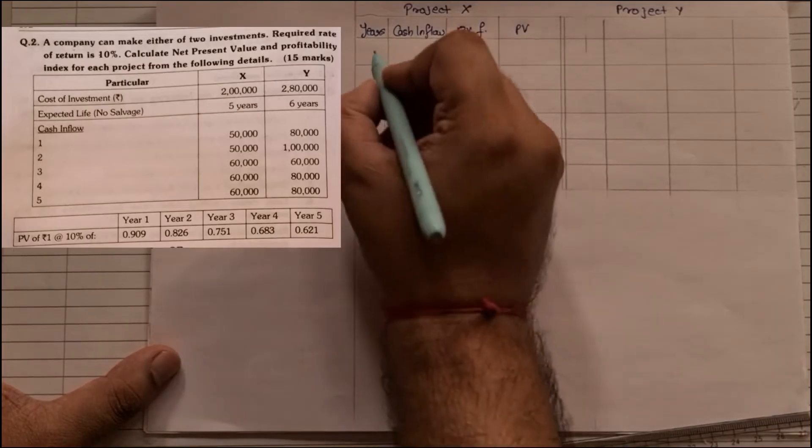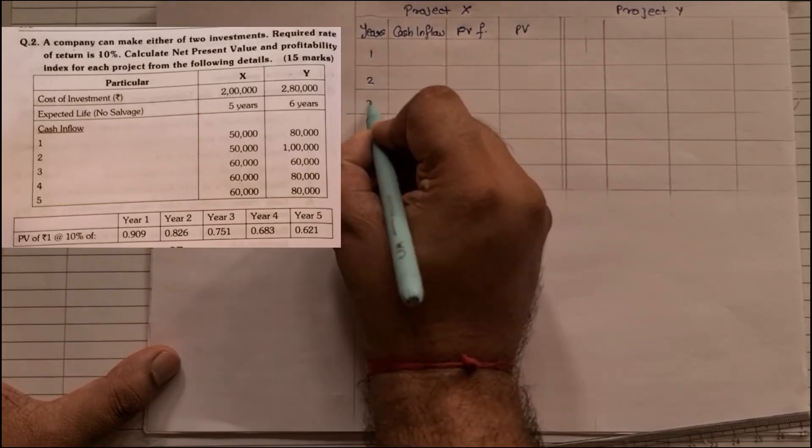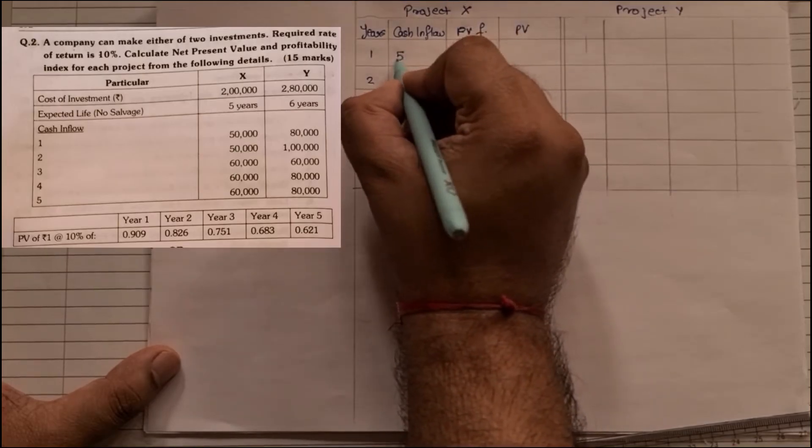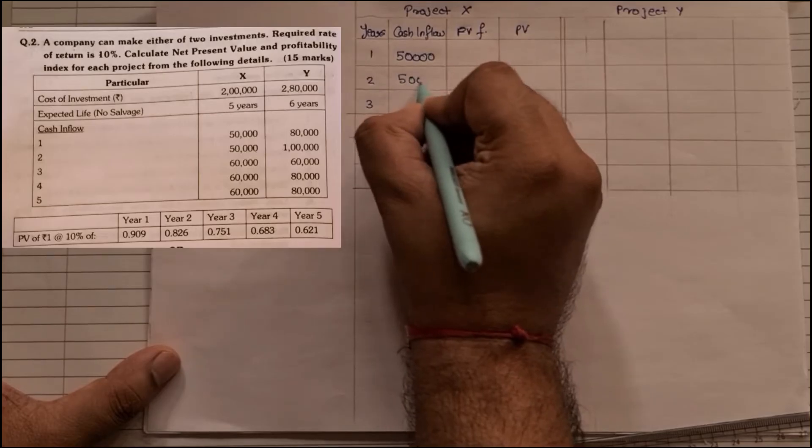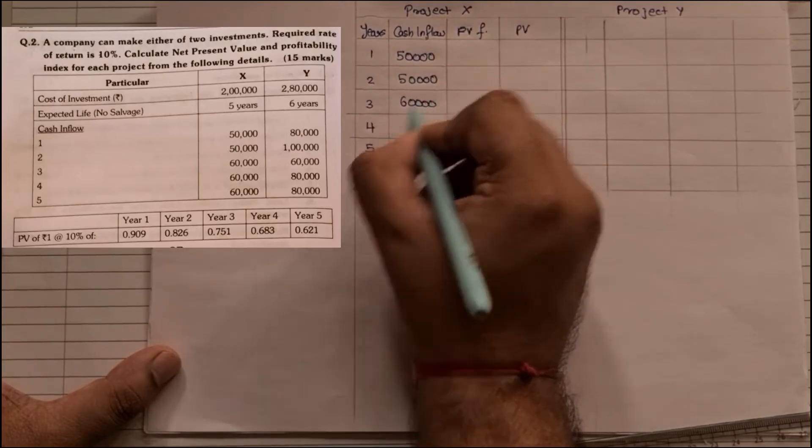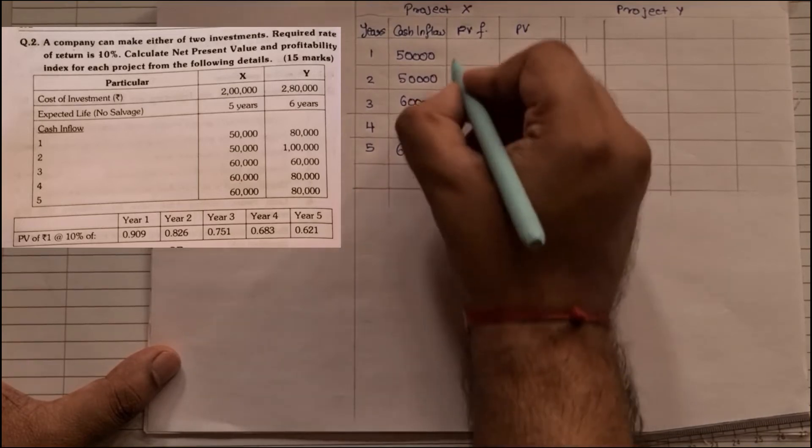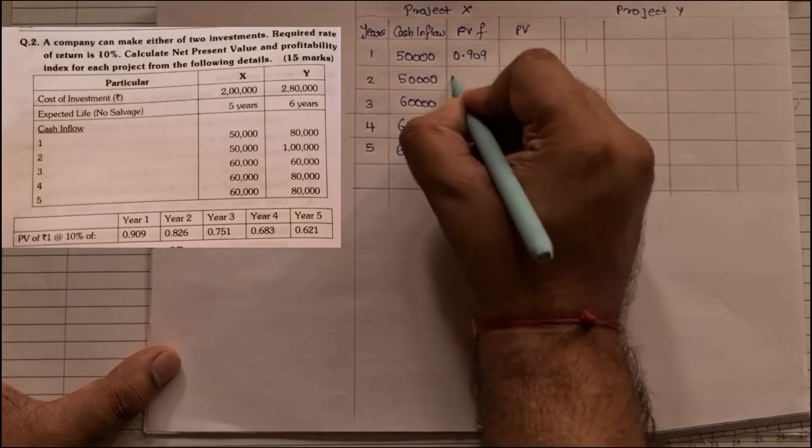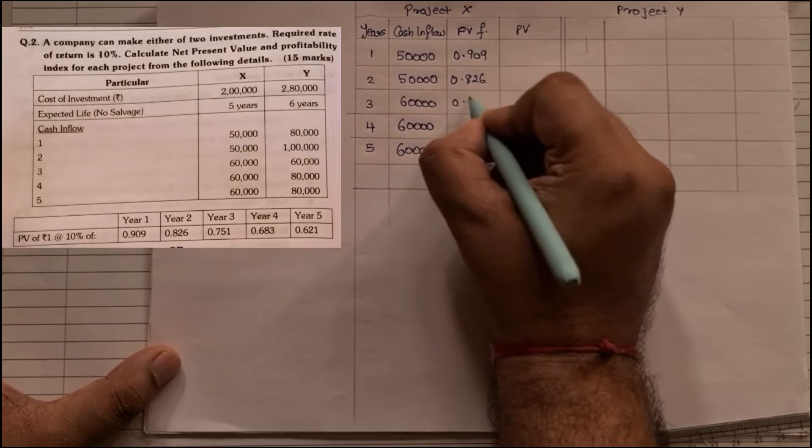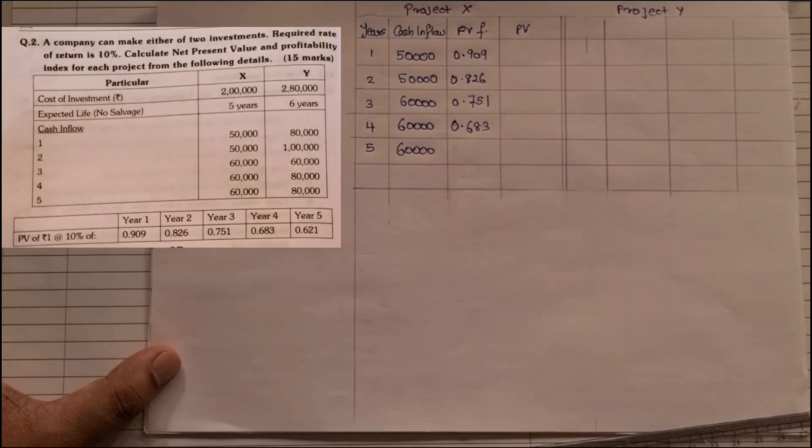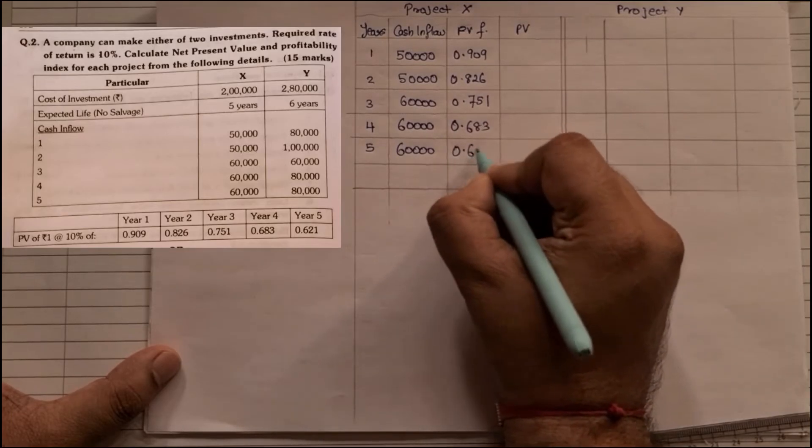The columns will be years, cash inflow, PV factor, and PV. First we'll solve the project X details. Project X is for five years, so number of years is 1, 2, 3, 4, and 5. The inflows are 50,000 for the first year, another 50,000 for the second year, 60,000 for the third year, another 60,000, and another 60,000. PV factor is given to us in the question: 0.909, 0.826, 0.751, 0.683, and 0.621.